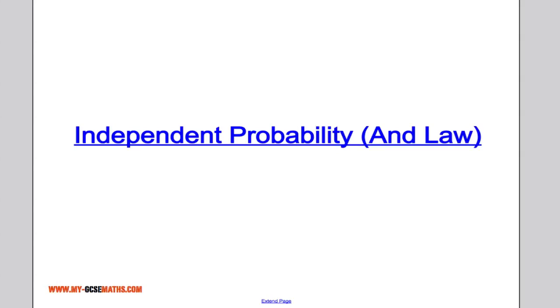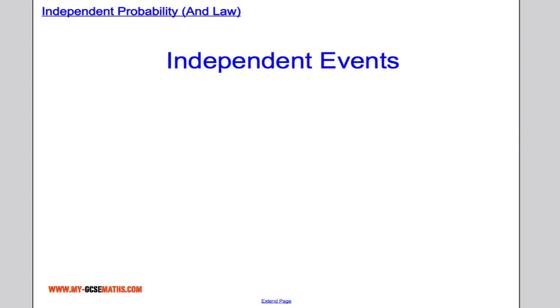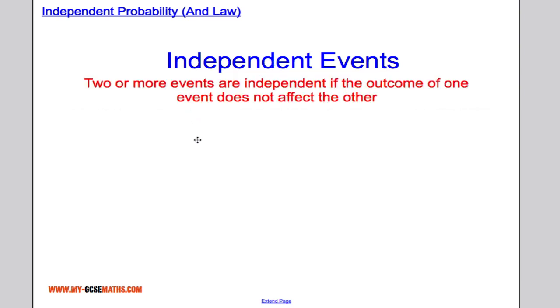Hi there, in this video we're going to take a look at independent events and the AND law of probability. Independent events are two or more events where the outcome of one event does not affect the other.